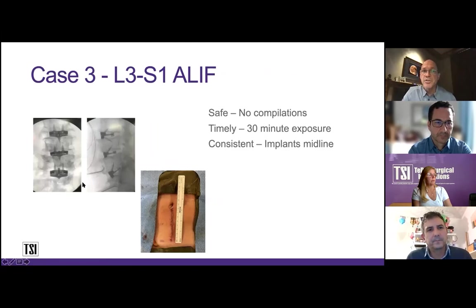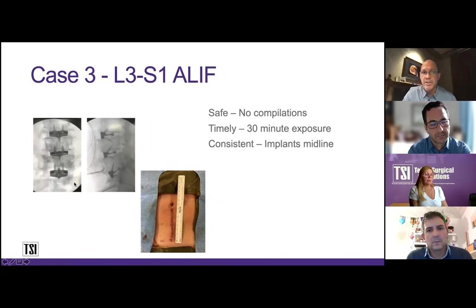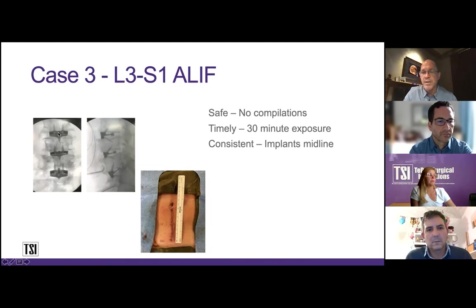Here's a three-level case — a front-back. You don't see the posterior hardware because I leave right when I'm done with the front case. My incision is below the belly button, the approach was 30 minutes, all implants are basically in the middle. This is a Globus cage with anchors — these cages go in nice and quick. The total operation was probably close to two hours.